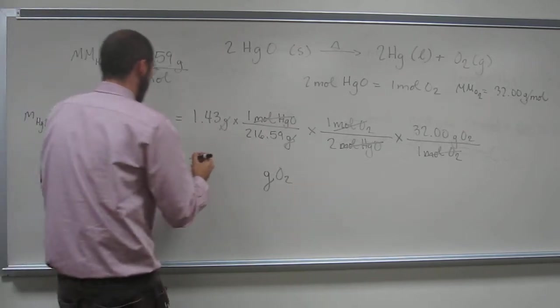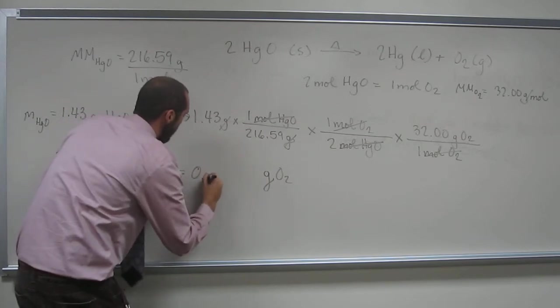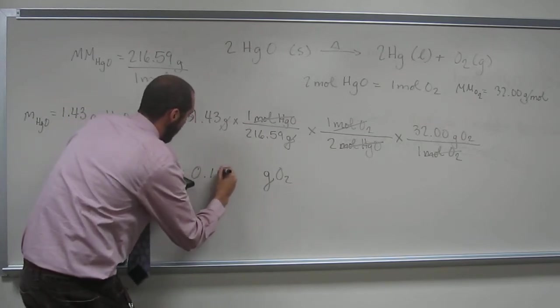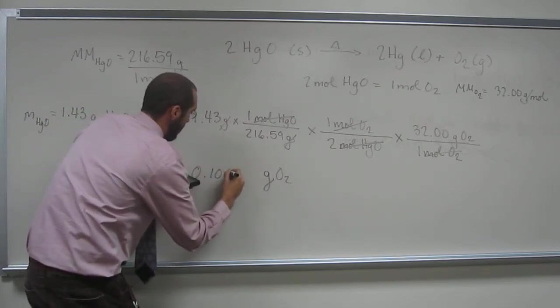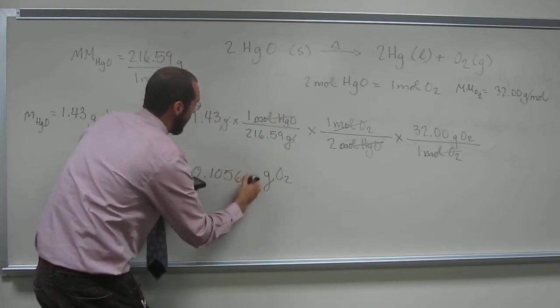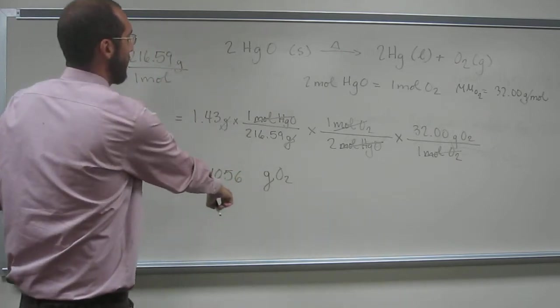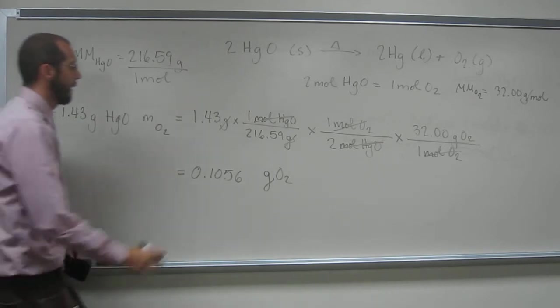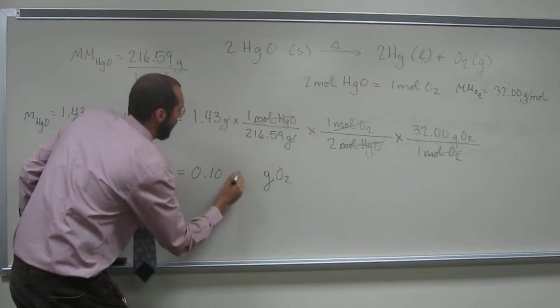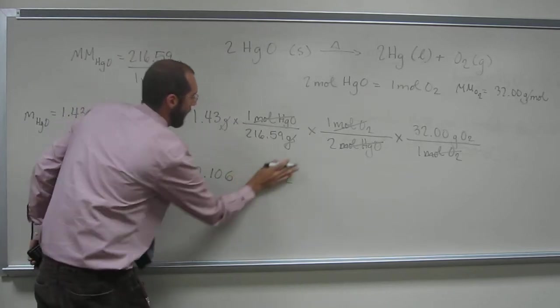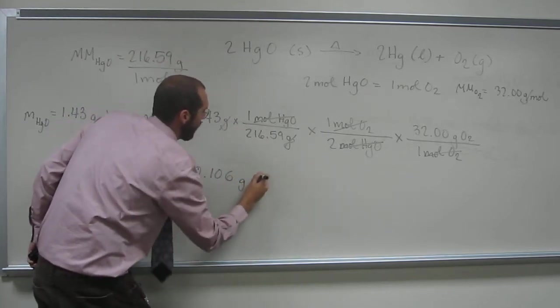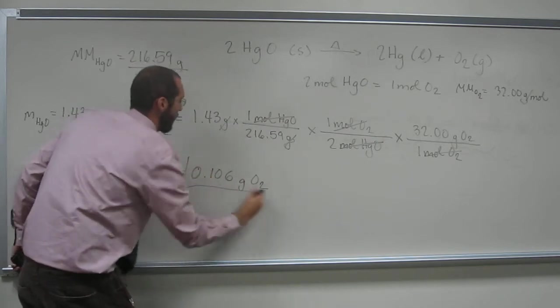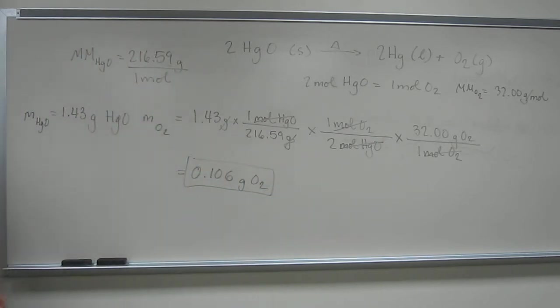And I get the number 0.1056. And is that the right number of sig figs? No, because we started with 3 over here. So 0.106 grams of O2.